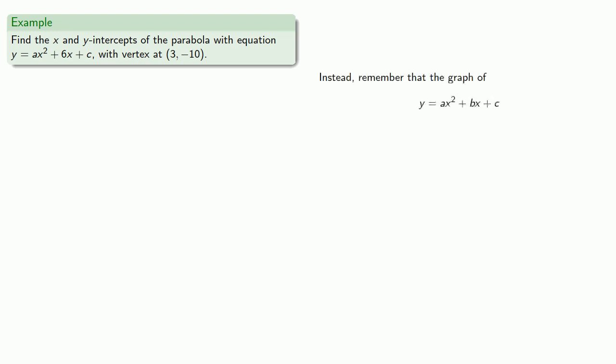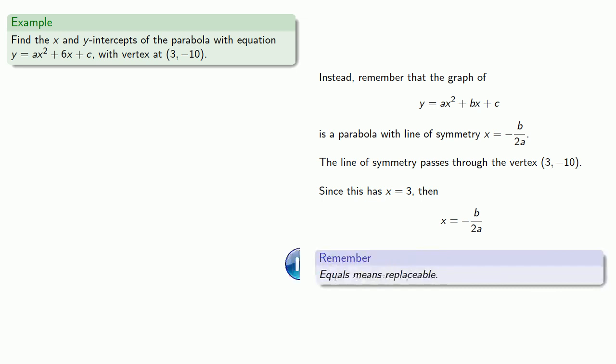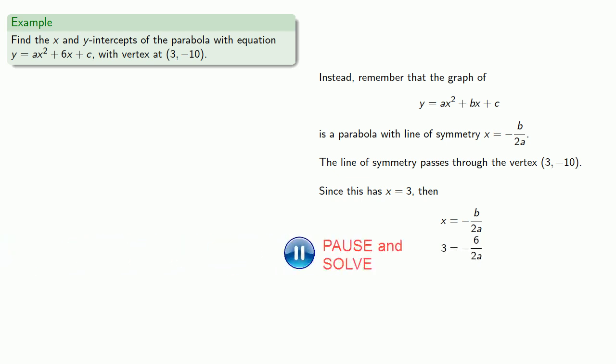So remember the graph of y = ax² + bx + c is a parabola with line of symmetry x = -b/(2a). And remember the line of symmetry passes through the vertex (3, -10). Since this has x = 3 and equals means replaceable, we can use this relationship to find a. And we see that a = -1.